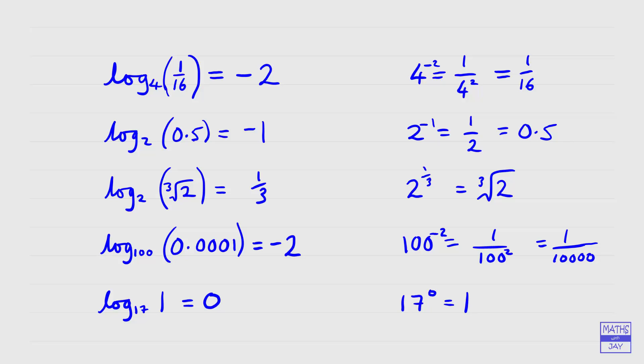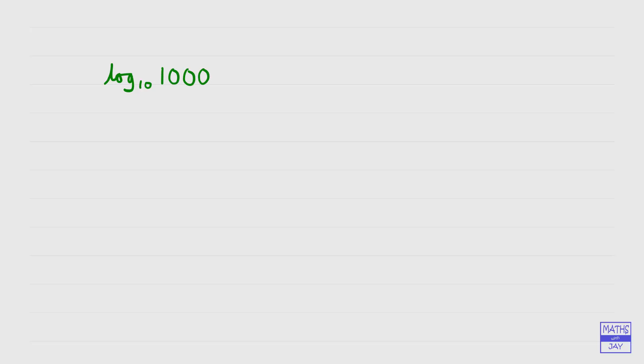So we've looked at logs to lots of different bases. What we're going to do next is look at a very special case: log to base 10. We'll look at log to base 10 of 1,000. We're thinking: 10 to the power of something equals 1,000, which is 10 cubed. That means the log to base 10 of 1,000 is equal to 3.